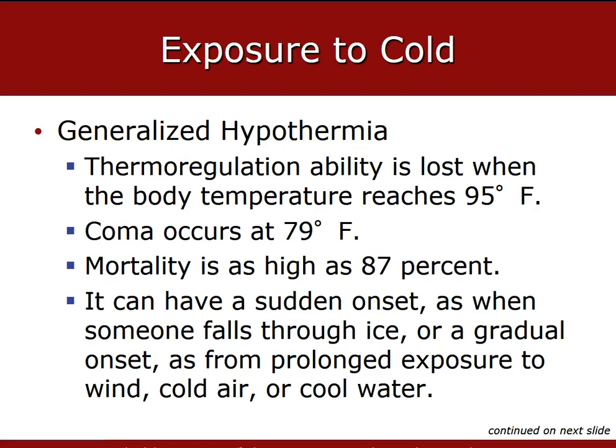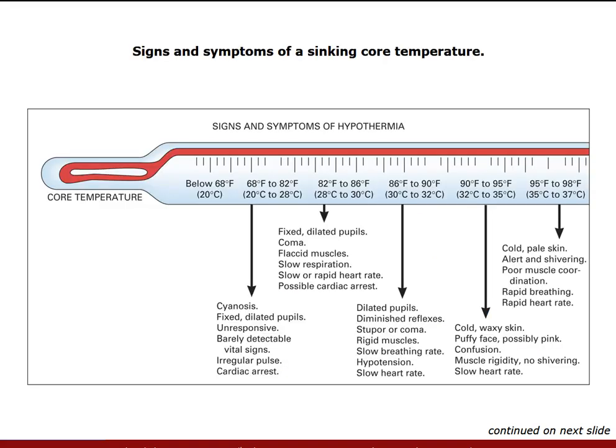The body is all about balance and likes to keep its temperature at a specific range. Thermoregulation ability is lost when the body temperature reaches 95 degrees Fahrenheit. Coma occurs at 79 degrees Fahrenheit, with a mortality that is high at 87%. It can be sudden onset, as when someone falls through ice into a frozen pond, or a gradual onset from prolonged exposure to wind, cold air, or water. Cases have been documented in which patients survived after reaching a core temperature as low as 64.4 degrees Fahrenheit. However, death can occur within two hours of the first signs and symptoms of generalized hypothermia if not recognized and treated.